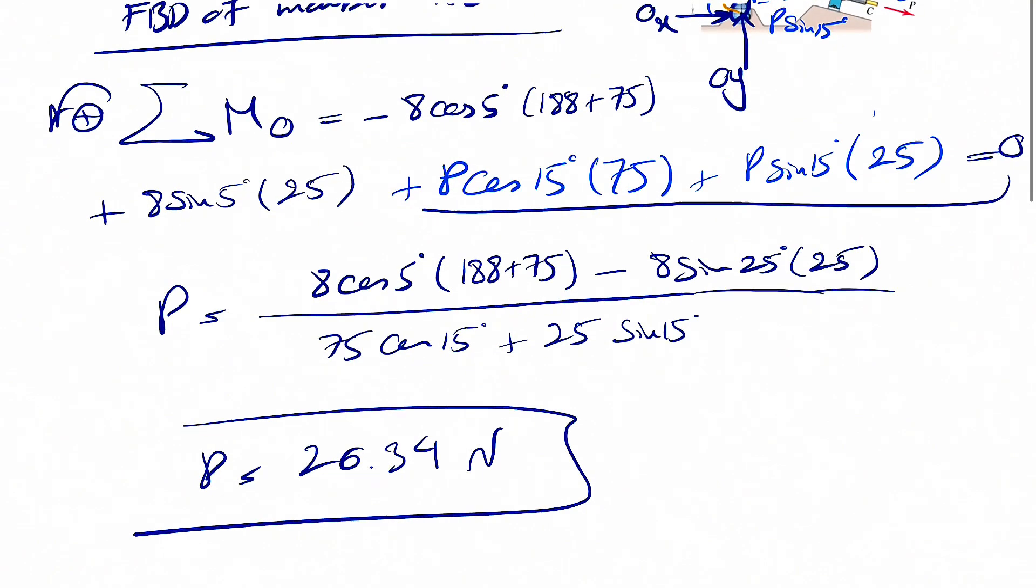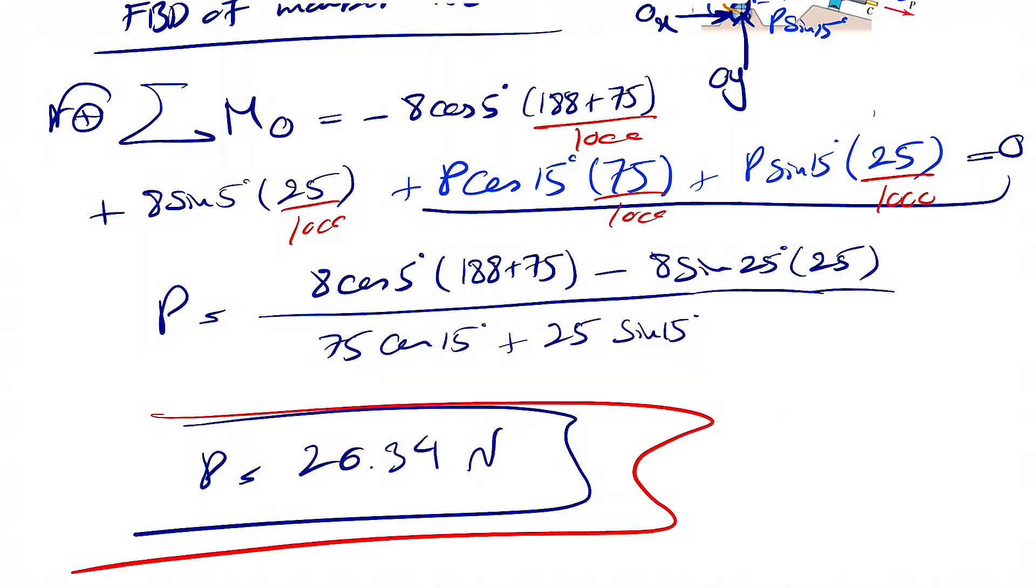And the reason I didn't do unit conversion is that because we're going to just multiply each of them by 1000, so they'll be canceled out. So there's no need for unit conversion. And that would be the final answer for this question.